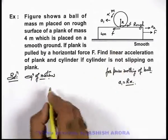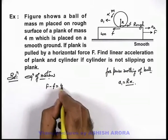For plank we can directly write: F minus f equals 4ma₂.